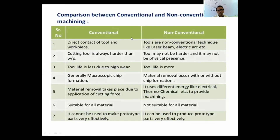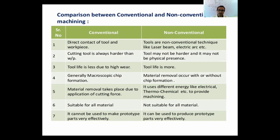Let us see the differences between conventional and non-conventional machining processes. The first and most important difference is that in conventional machining, there is direct contact between the tool and the workpiece. If you are going to cut an object, you must make direct contact of the tool with the workpiece. In non-conventional machining, tools are non-conventional techniques like laser beam or electric arc or plasma arc — you need not physically touch these tools to the workpiece. This is the major difference.